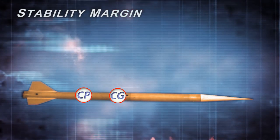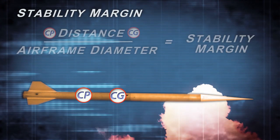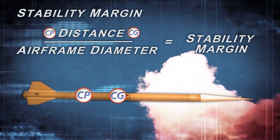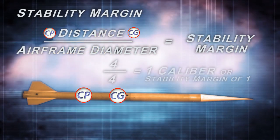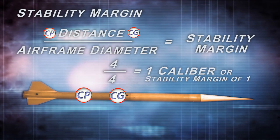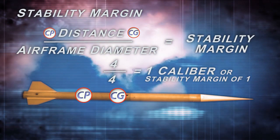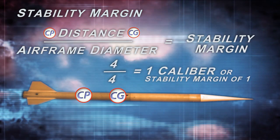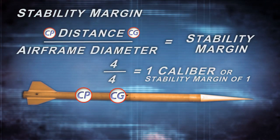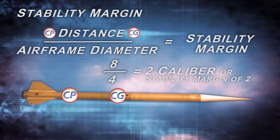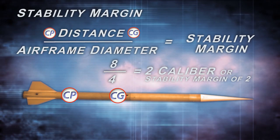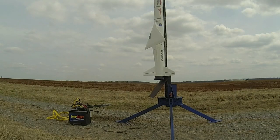One rule of thumb for stability in HPR is that the CG must be at least one body diameter, or one caliber, in front of the CP. This is the stability margin. Mathematically, the stability margin is the distance between the CG and CP divided by the airframe diameter. So if you are flying a rocket with a maximum diameter of four inches, your CG needs to be at least four inches in front of your CP, giving one caliber of stability or a stability margin of one. If your CG was eight inches in front of your CP, you would have two calibers of stability or a stability margin of two. Most flyers recommend stability margins of two or higher.